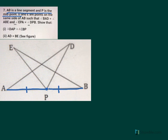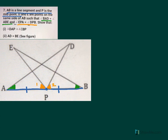Two angles are given equal. We have angle BAD equal to angle ABE. BAD is this angle, and ABE is this angle. Then we have EPA equal to DPB — EPA is this angle, equal to DPB which is this angle. We label the angles: this angle 1, this angle 2, and in the middle this angle 3.